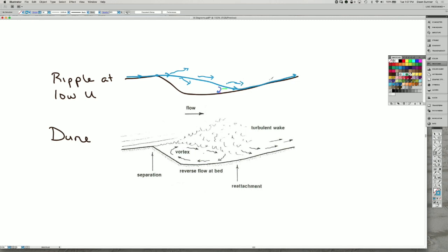When the flow is deflected across the back of the next ripple that's downstream, the boundary layer reestablishes itself again.